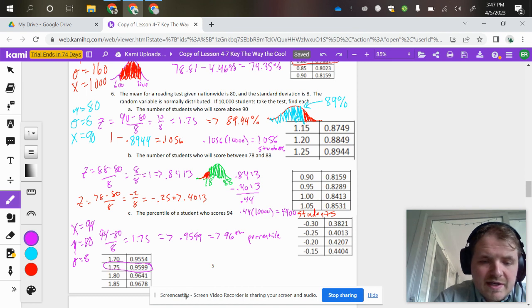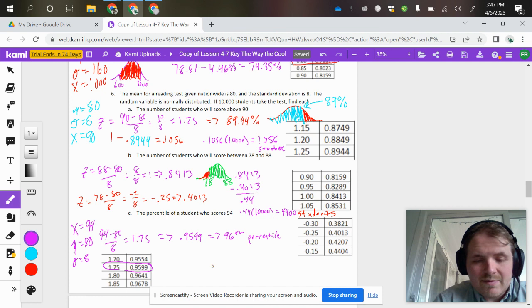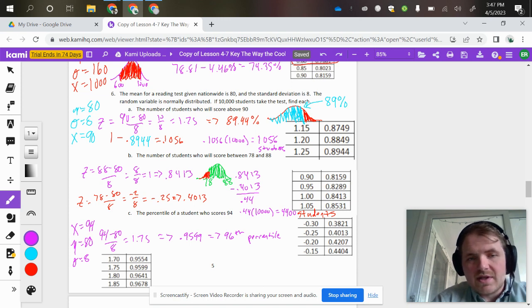Screenshotting the table there, that gives you 95%, or basically 96% when you round up. So they are in the 96th percentile. Again, that's a lot easier to do than the question we did the other day.